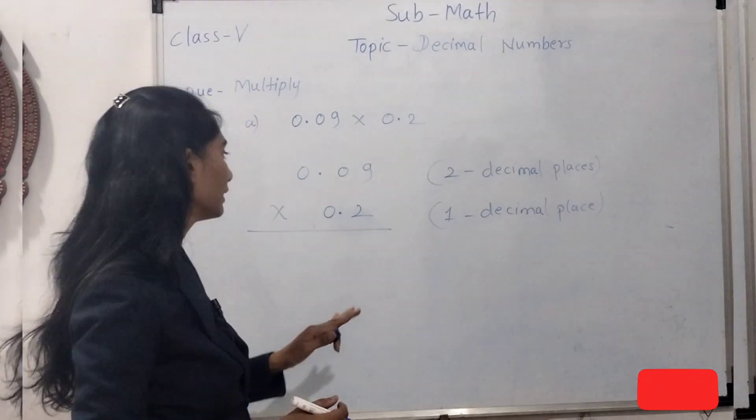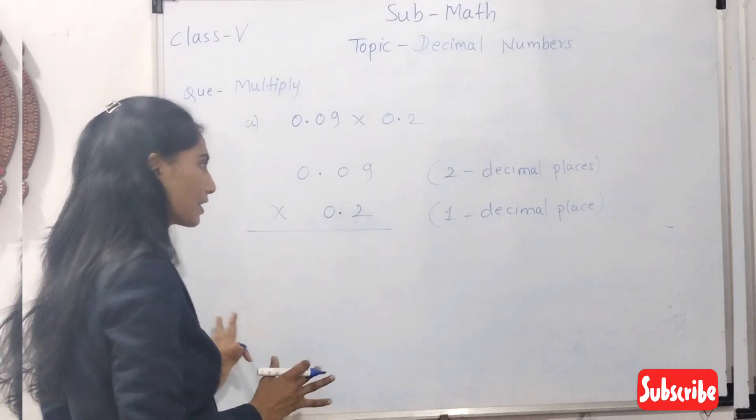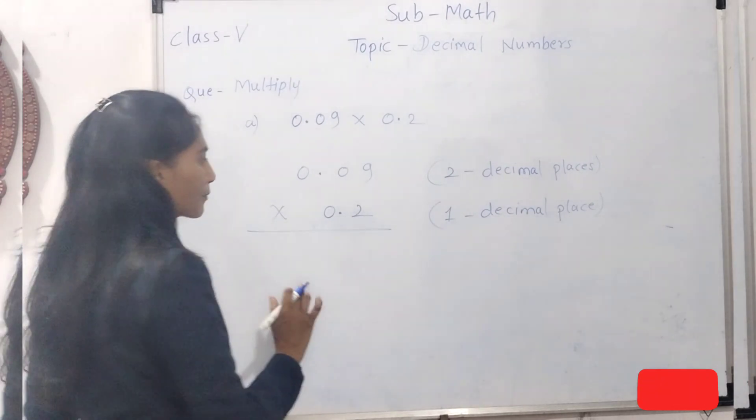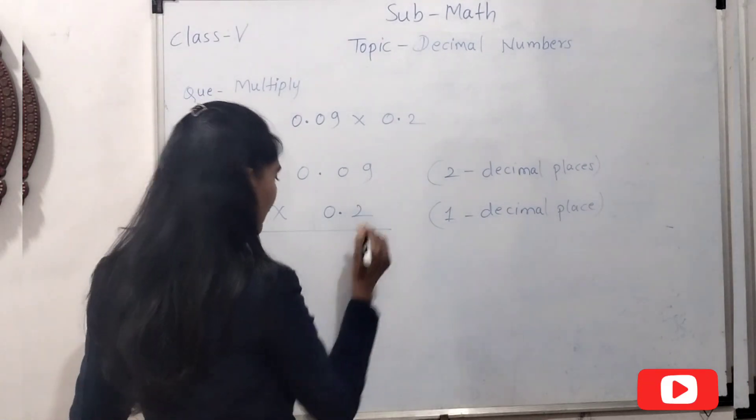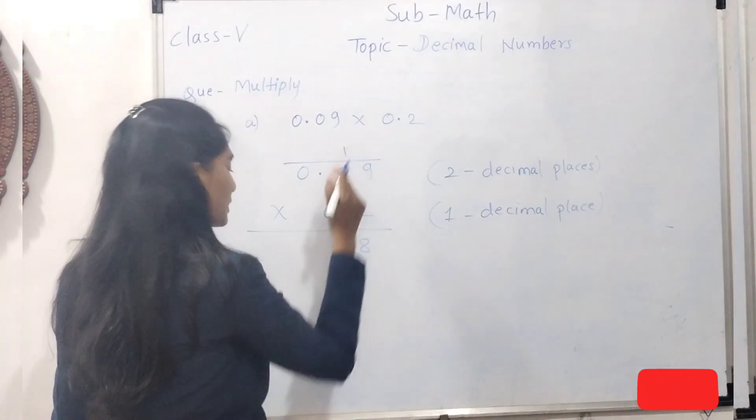Now you have to multiply these two numbers by ignoring the decimal point. Means simply, just like multiplication of whole numbers. 2 nines are 18, 1 carry over. 0 times 2, zeros are 0 plus 1 is 1. 2 zeros are 0.